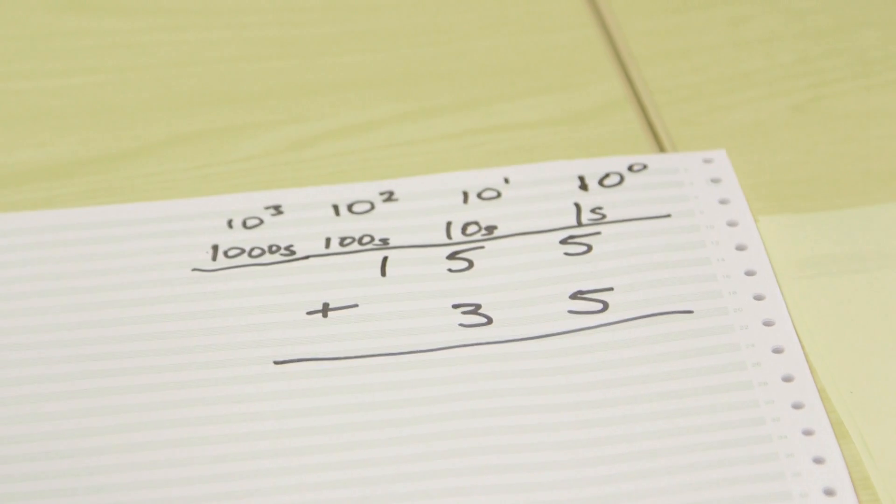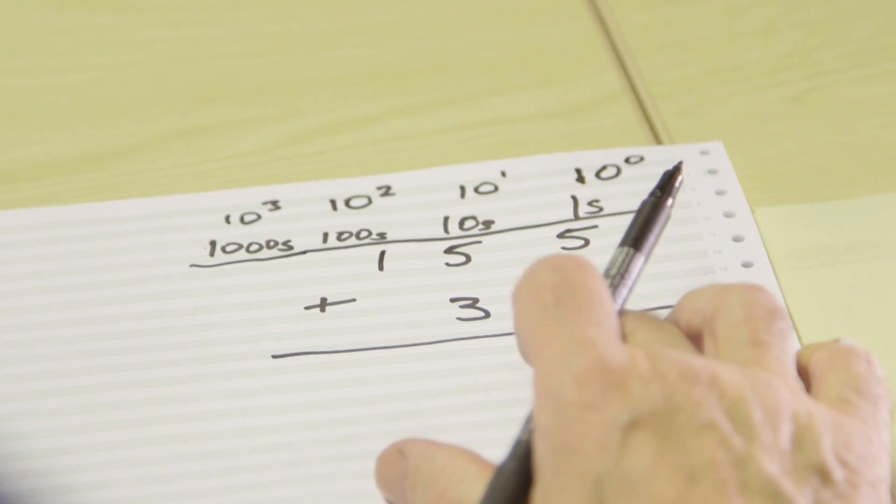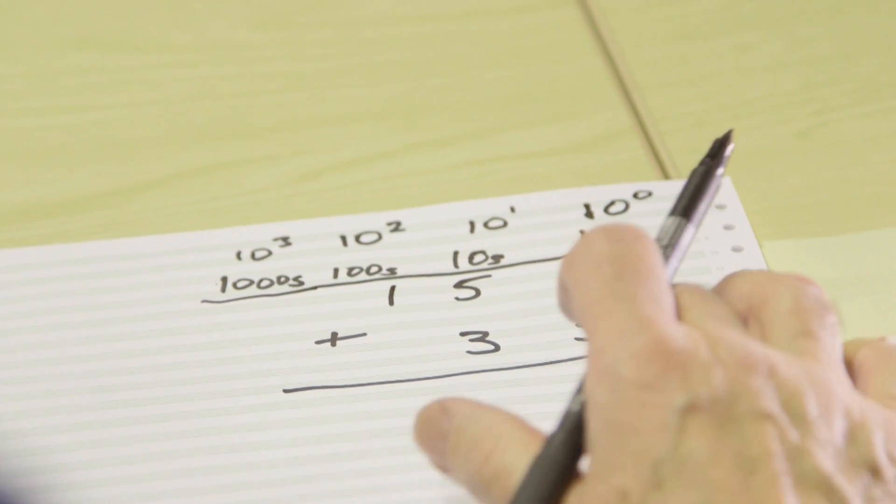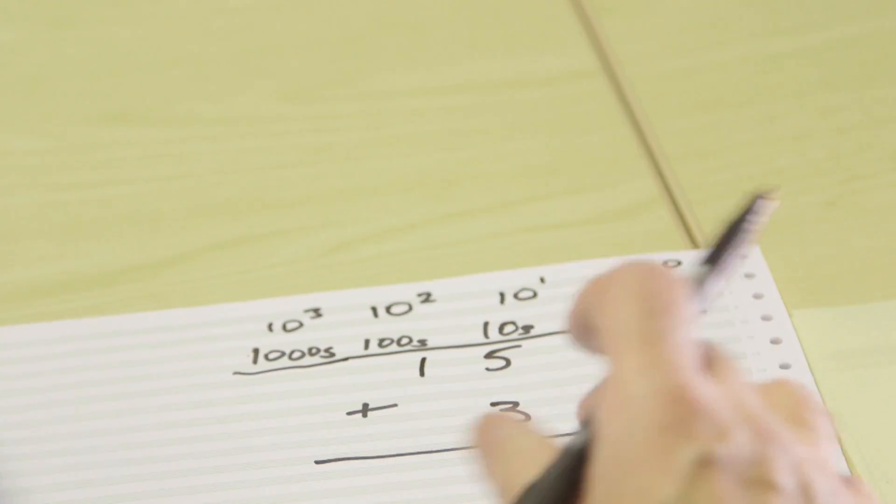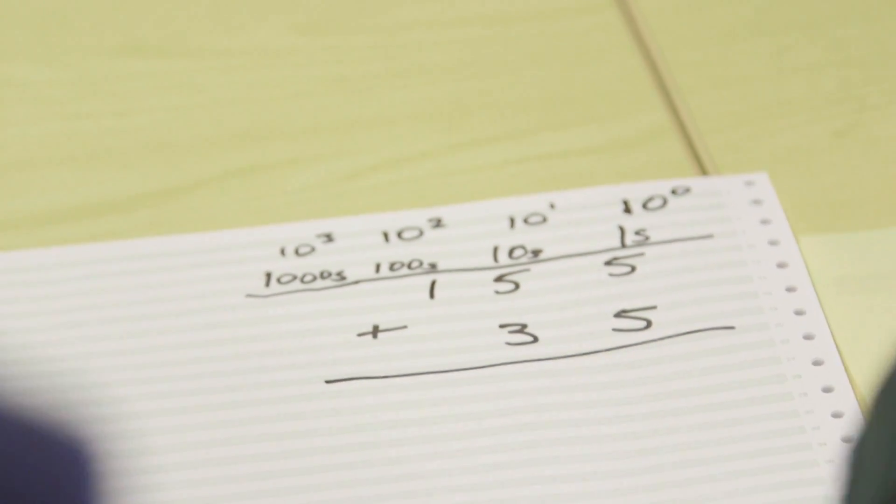Now let's just draw a line here and do this addition. 5 plus 5 is 10, but if you get 10 in any one of these columns, you can't write down 10. The rule is that every digit in one of these columns can range between 0 and 9. When we come on to binary, of course, we'll be counting in twos, and the rule there is every digit you put down must be 0 or 1, but it can't be 2.